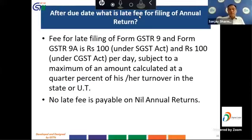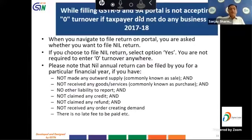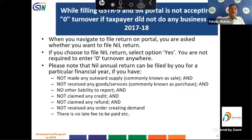While filing GSTR 9 and 9A, the portal is not accepting zero turnover if the taxpayer did not do any business in FY 2017-18. When navigating to file your return, you are asked whether you want to file a nil return — if you choose nil and select yes, you will not be required to enter zero turnover. A nil annual return can be filed only if: you have not made any output supply, not received any goods or services, have no liability to report, have not claimed any credit or refund, have not received any demand order, and there is no late fee payable.